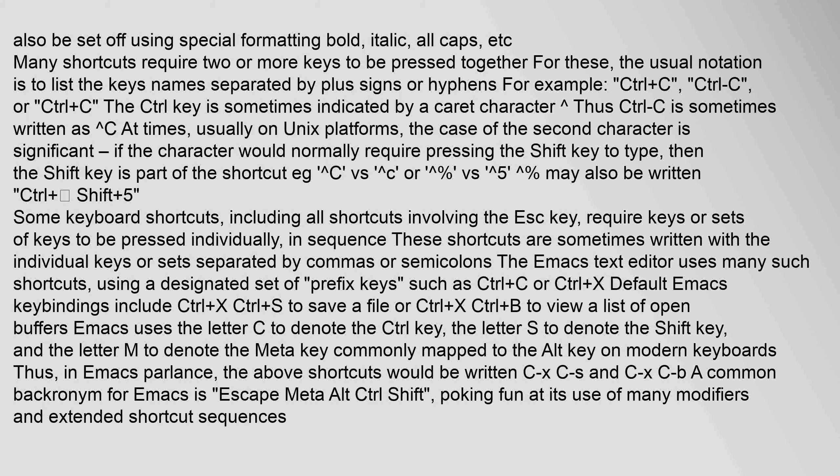Default Emacs key bindings include Ctrl+X Ctrl+S to save a file, or Ctrl+X Ctrl+B to view a list of open buffers. Emacs uses the letter C to denote the Control key, S to denote the Shift key, and M to denote the Meta key, commonly mapped to the Alt key on modern keyboards. Thus in Emacs parlance those shortcuts would be written C-x C-s and C-x C-b. A common backronym for Emacs is 'Escape Meta Alt Control Shift,' poking fun at its use of many modifiers and extended shortcut sequences.